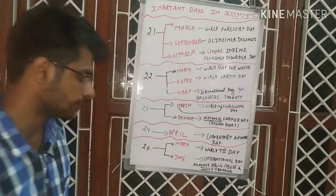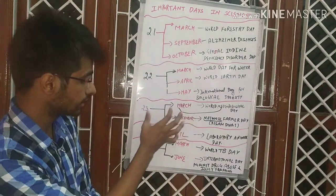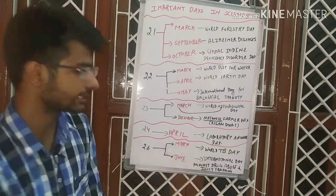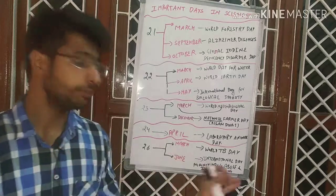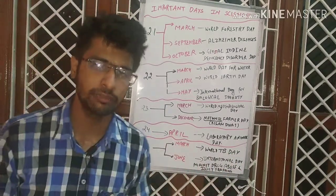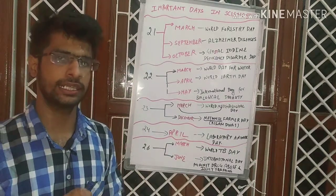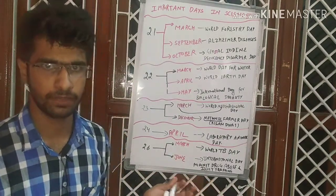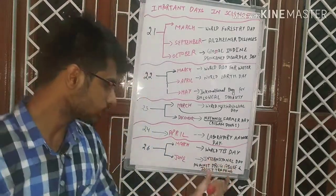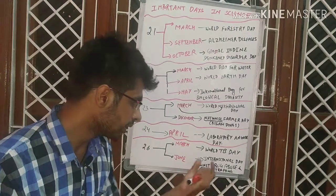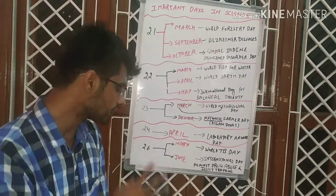26 March is World TB (Tuberculosis) Day. When thinking about tuberculosis, the term drug resistance comes to mind. Related to this, 26 June is the International Day Against Drug Abuse and Illicit Trafficking. These two days are linked — one is TB Day and the other is the International Day Against Drug Abuse — both observed on the 26th of their respective months.